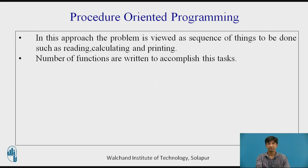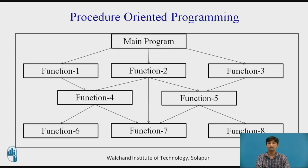The steps to be followed are written as a procedure. The primary focus is on functions. The figure shows the typical program structure for procedural programming, using the technique of hierarchical decomposition to specify tasks. Procedure-oriented programming consists of writing a list of instructions for the computer to follow, organized into groups known as functions.